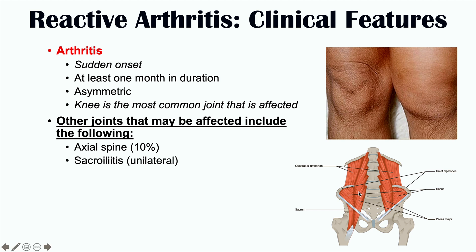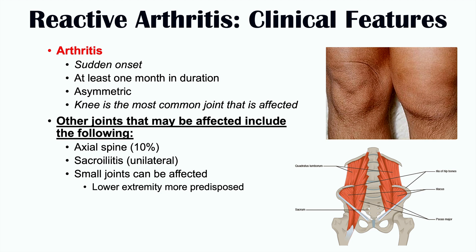Sacroiliitis — inflammation where the sacrum meets the ilium of the pelvis — can also be affected, and it is unilateral. Some small joints can also be affected, and we most often see this in the lower extremities. Small joints in the lower extremities are more likely to be affected than those in the upper extremities.